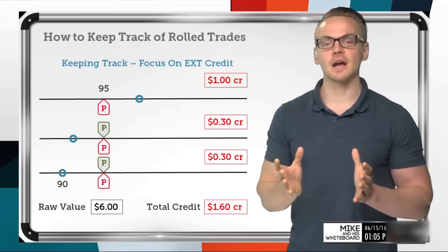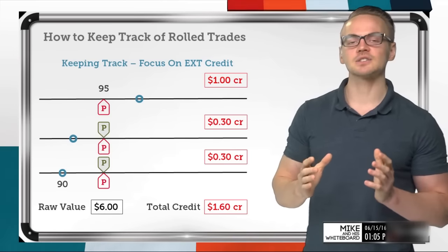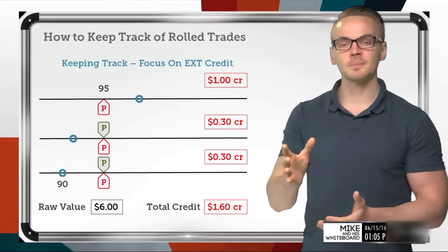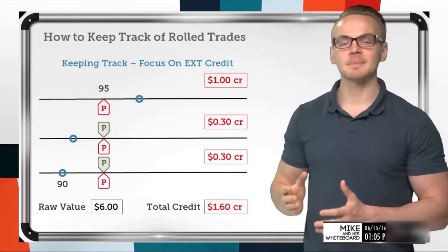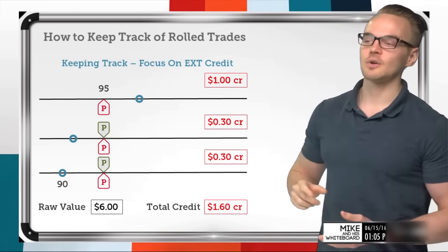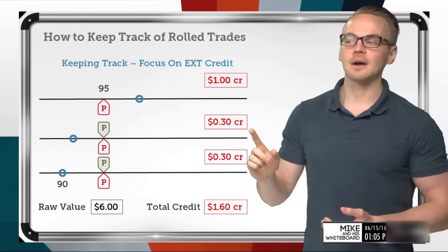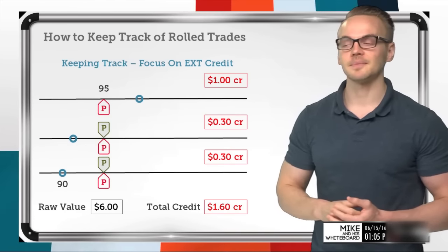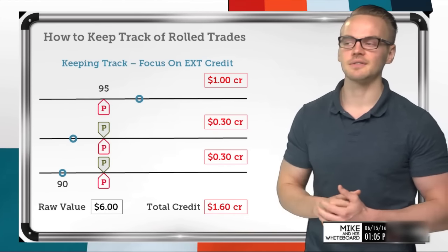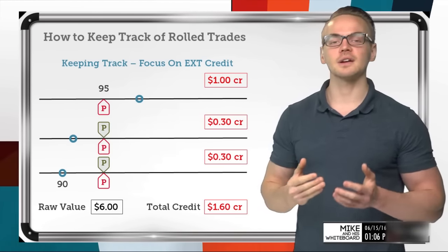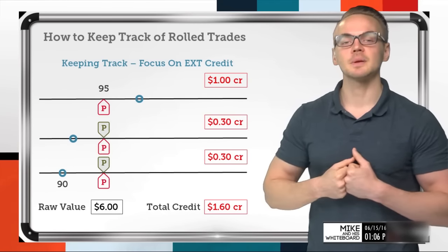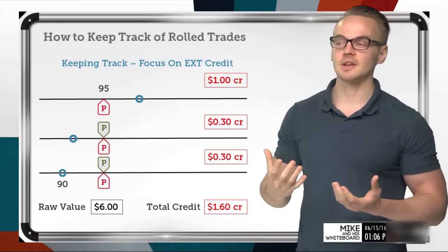What I need to keep track of is the extrinsic value. If I track the extrinsic value through all the rolls, I can identify exactly what I need to buy back my current position for to break even. So let's total it all up: I originally sold for one dollar, rolled once for a 30-cent credit, then rolled again for another 30-cent credit — giving me a total extrinsic value credit of one dollar and 60 cents. I can use that collected premium to offset any losses I may have incurred.